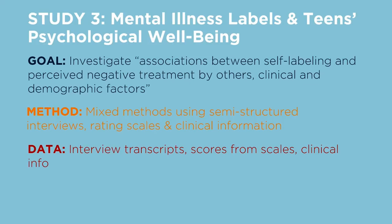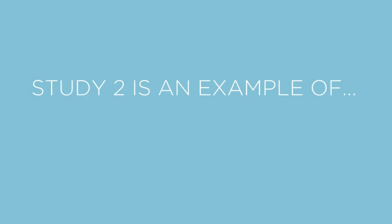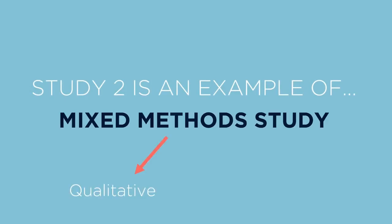The data in this study consisted of interview transcripts, scores from the scales, and clinical information. Because researchers combined two methods, they also used several data analysis techniques: textual analysis to find themes in the interview transcripts, and statistical analyses for relationships between variables on the scale and the clinical information. The article included quotes from the teens as well as statistical tables. This was a bit of a trick question, because this study uses both qualitative and quantitative methods — we call this kind of study a mixed methods study.